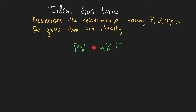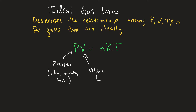The equation for this is PV equals NRT, where P is pressure — and pressure could either be in ATM, millimeter Hg, or Torr, so you have to watch the units. V is volume, which is in liters. N is moles, the amount of any gas. T is temperature, and this temperature has to be in Kelvin.